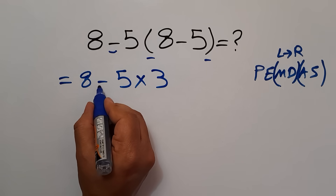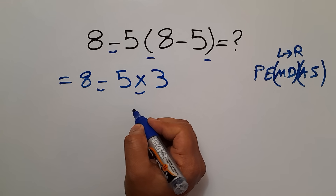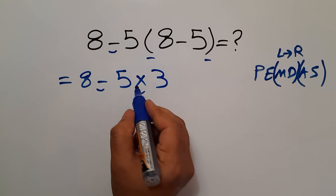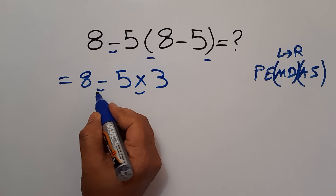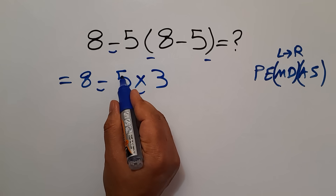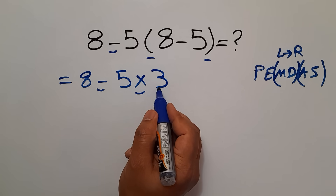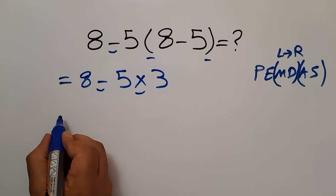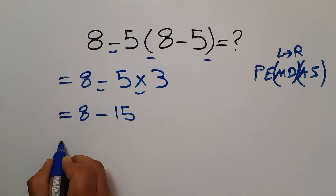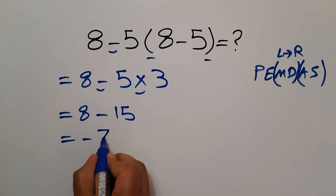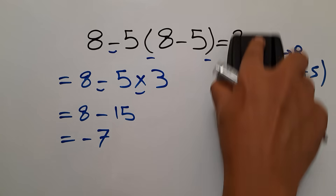Now, we have this subtraction and this multiplication. According to PEMDAS, multiplication has higher priority than subtraction. So, we have to do this multiplication first. 5 times 3 equals 15. So, 8 minus 15, and this is equal to negative 7. Our final answer to this problem is negative 7.